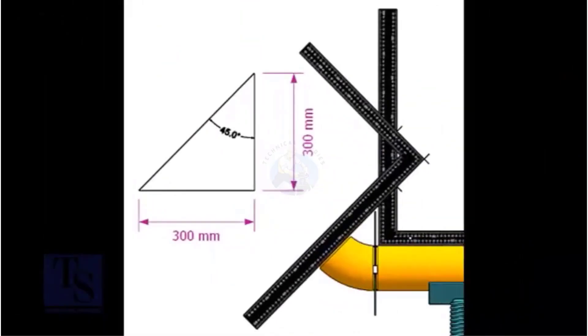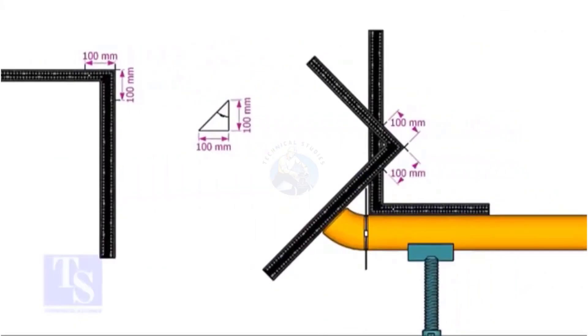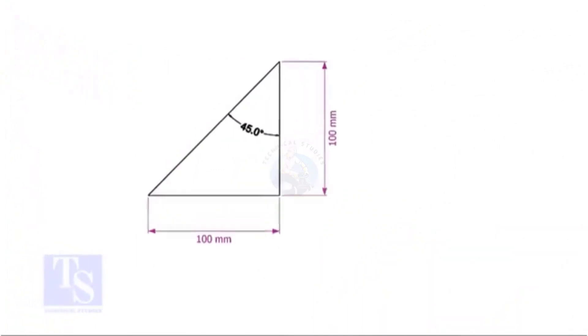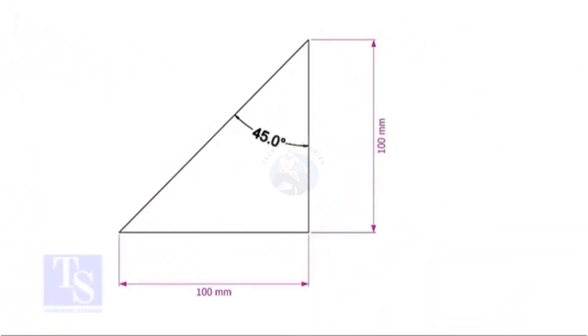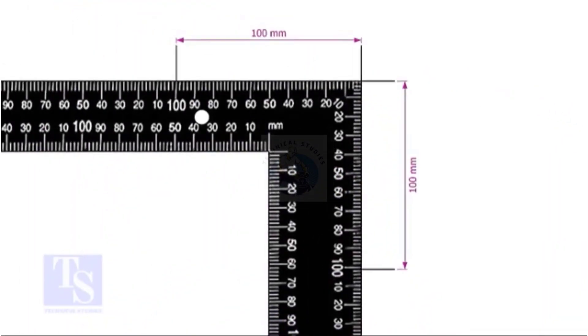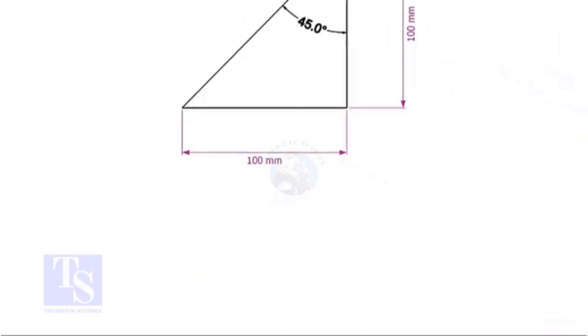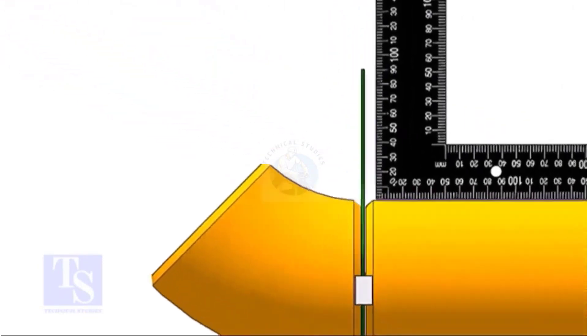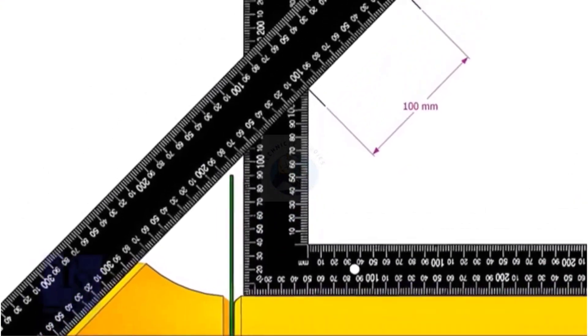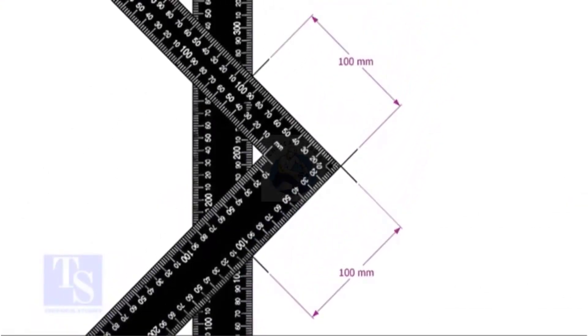For the 45 degree, the set and the run are the same. Mark any convenient distance on the right angle as shown. Just follow the process shown in the 30 degree elbow fit up.